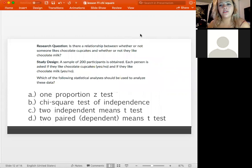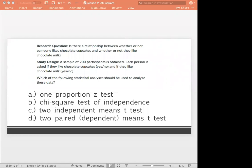All right, let's try this one. So our research question is, is there a relationship between whether or not someone likes chocolate cupcakes and whether or not they like chocolate milk? Pressing questions here. So we have a sample of 200 participants, and then each person's asked if they like chocolate cupcakes and if they like chocolate milk. Well, I would love to be asked that. The answer is yes to both. I'm not part of the data, though, so don't count that in there. So which of the following statistical analysis should be used to analyze these data? Go ahead and check through these answers. Let me know what you think the answer is, and we will go over it then together.